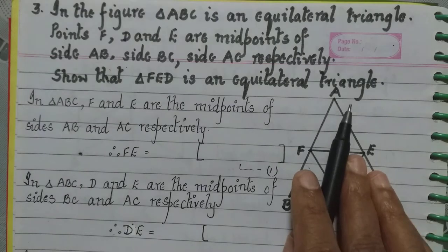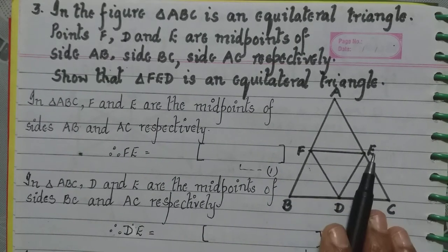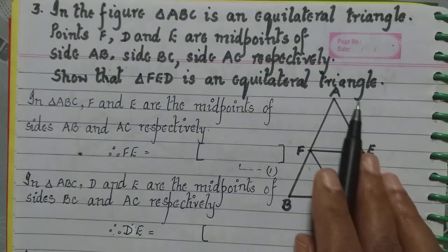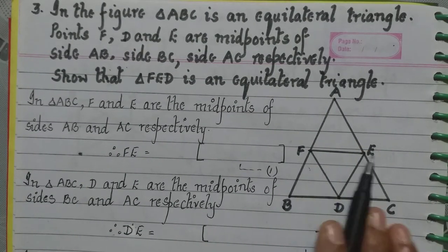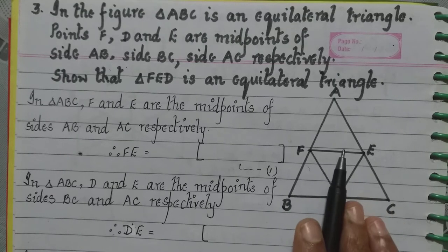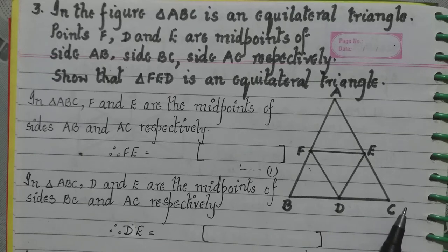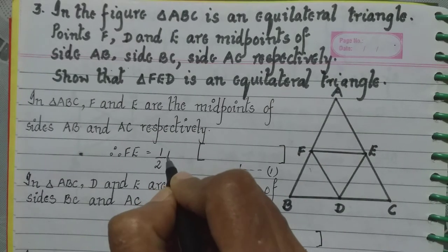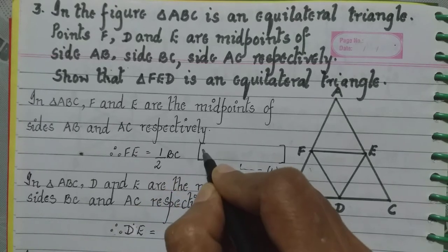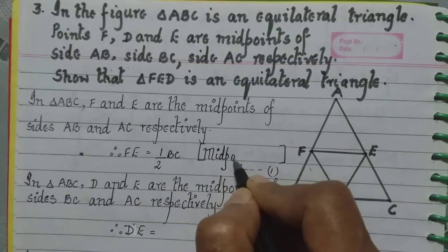Now in triangle ABC we know that F and E are the midpoints of the sides AB and AC respectively. So what will be FE now? It will be half of the third side and the third side is BC. So I write FE is equal to half BC. And from where do I get this? From midpoint theorem.